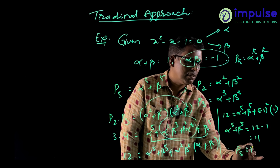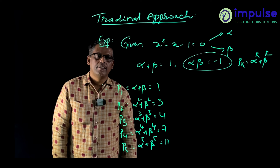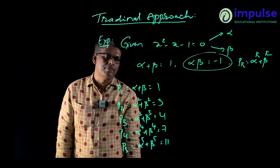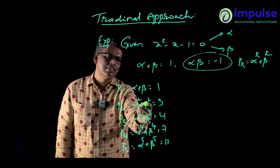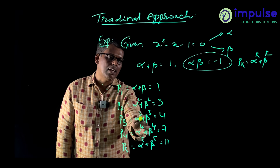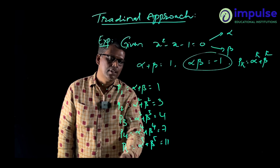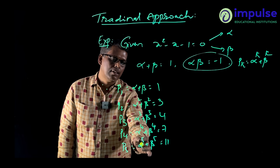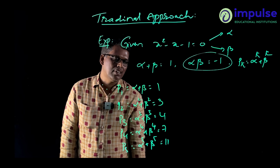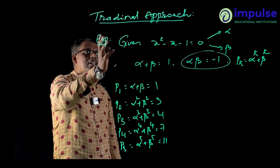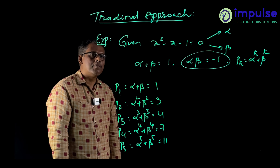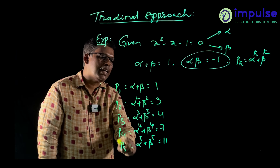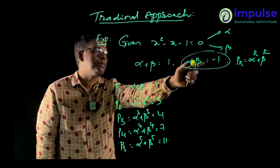To summarize: we have calculated p1 = alpha + beta = 1, p2 = alpha² + beta² = 3, p3 = alpha³ + beta³ = 4, p4 = alpha⁴ + beta⁴ = 7, p5 = alpha⁵ + beta⁵ = 11. The key concept of the traditional approach is to use algebraic factorization to convert all expressions into the sum of the roots and the product of the roots.